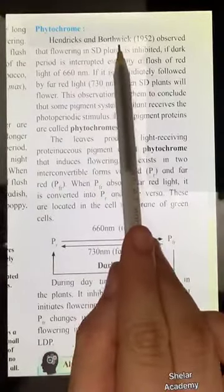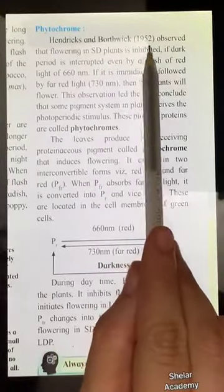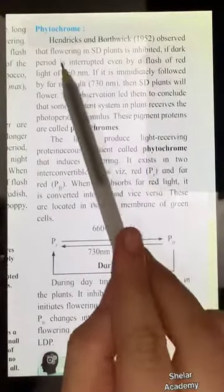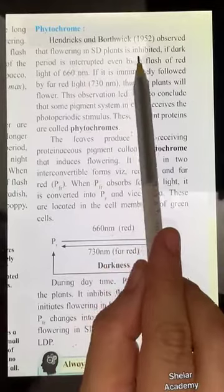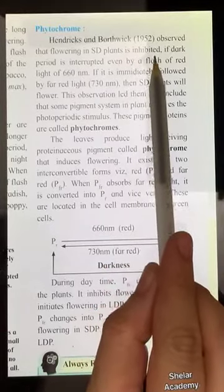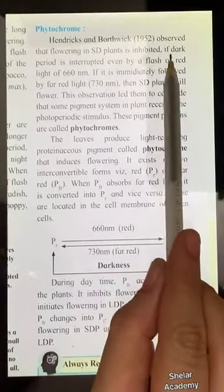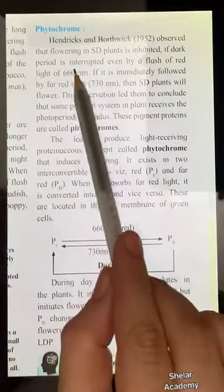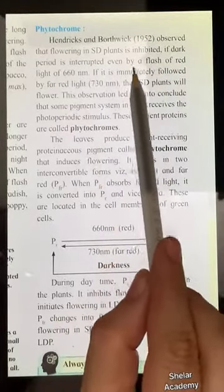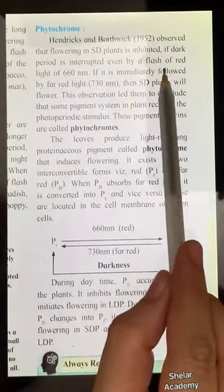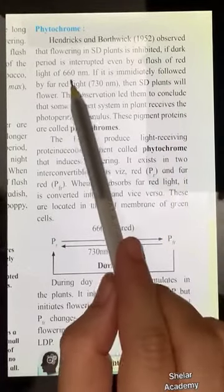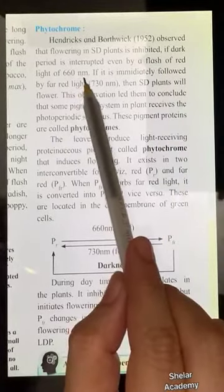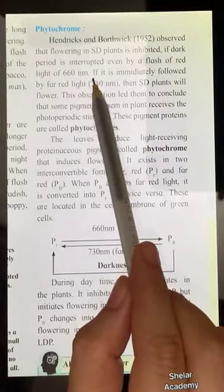Hendricks and Borthwick observed that flowering in short day plants is inhibited if the dark period is interrupted even by a small flash of artificial light — especially red light of 660 nanometers.